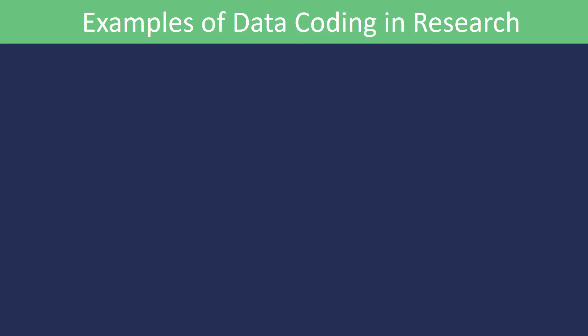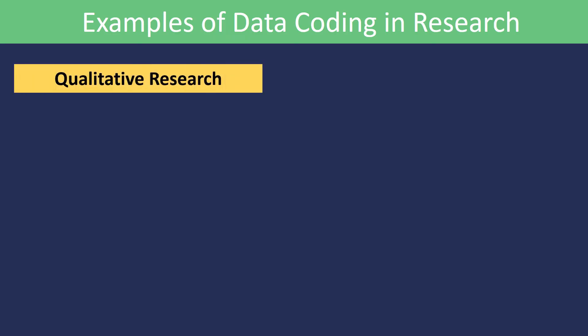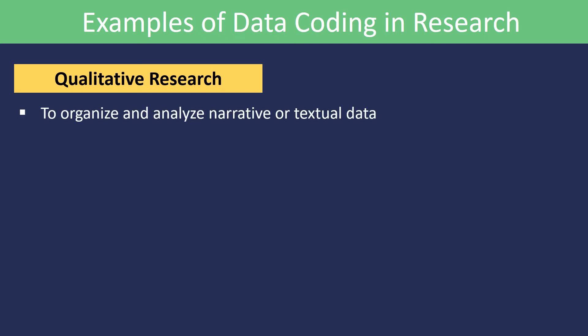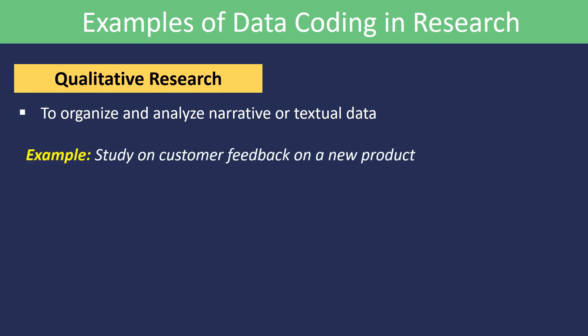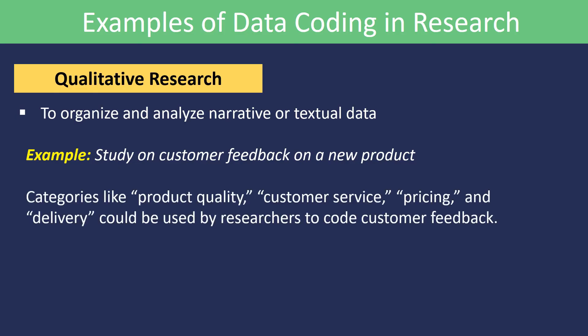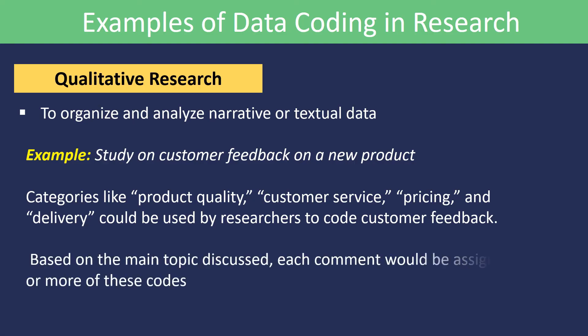Examples of data coding in research. Let's look at some examples to see how data coding is used in different kinds of research. Qualitative research: data coding is frequently used in qualitative research to organize and analyze narrative or textual data. For example, consider a study on customer feedback on a new product. Categories like product quality, customer service, pricing, and delivery could be used by researchers to code customer feedback. Based on the main topic discussed, each comment would be assigned one or more of these codes.